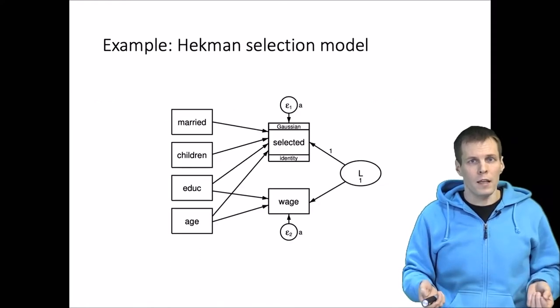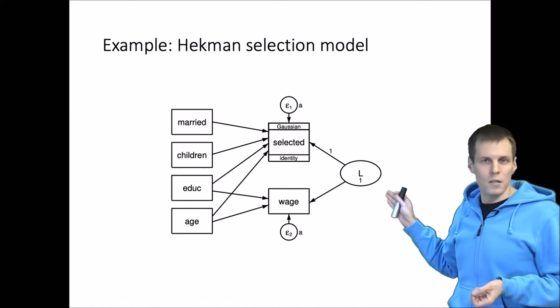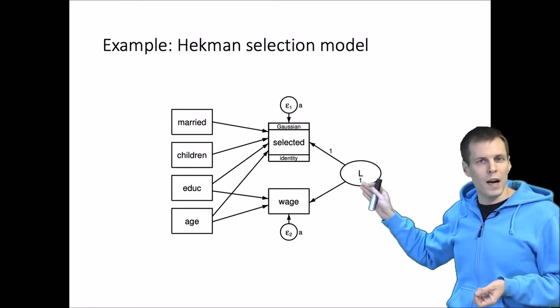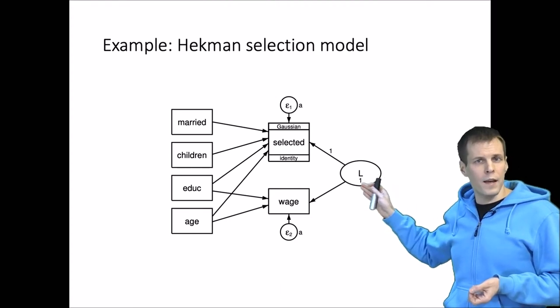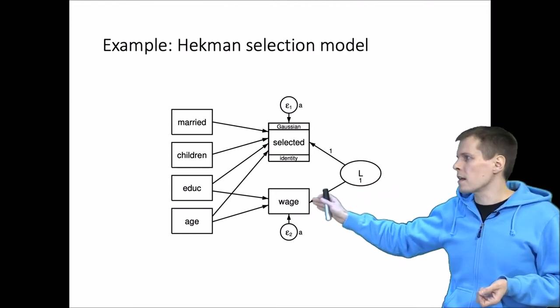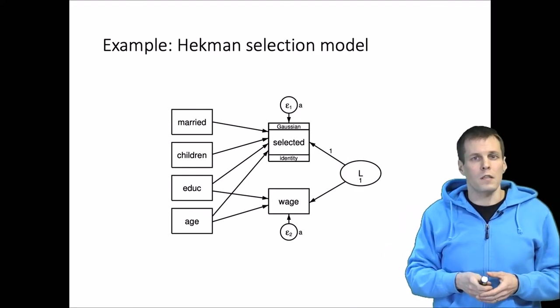For example, you can take the Heckman selection model, and it's actually a latent variable model as well. There's a latent variable—an omitted variable—that we estimate during the analysis process that affects both wages and whether a person chooses to work. This is of course Heckman's classic example.